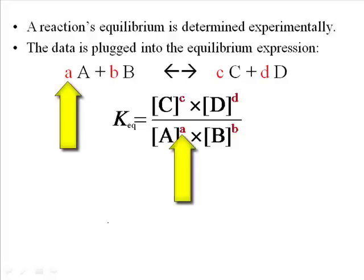If you had a 2 in front of A, you would be squaring it. The numbers we plug in are in terms of concentration, usually moles per liter, which is a concentration unit we'll be seeing in Chapter 9. When you plug your numbers in, you're getting some number out of this expression that gives us information about the mix of reactants and products.